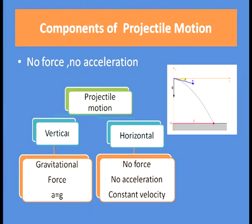What are the components of projectile motion? As we have studied in Newton's second law, when no force is applied, there will be no acceleration in the object. In case of projectile motion, there are two components: vertical component and horizontal component.